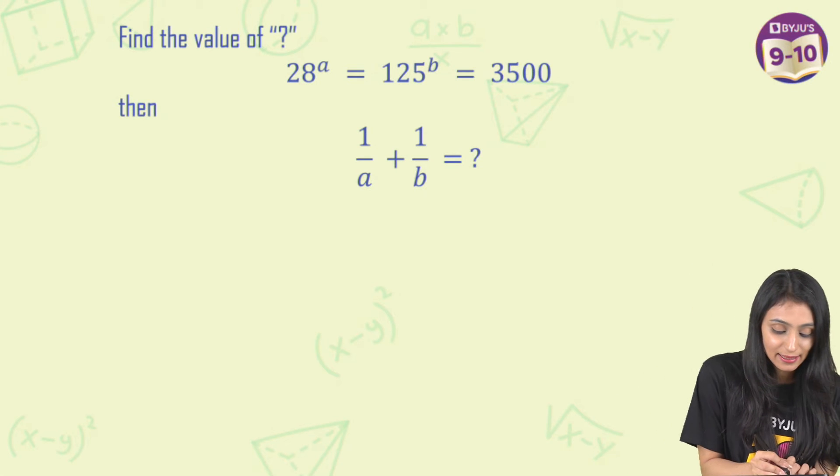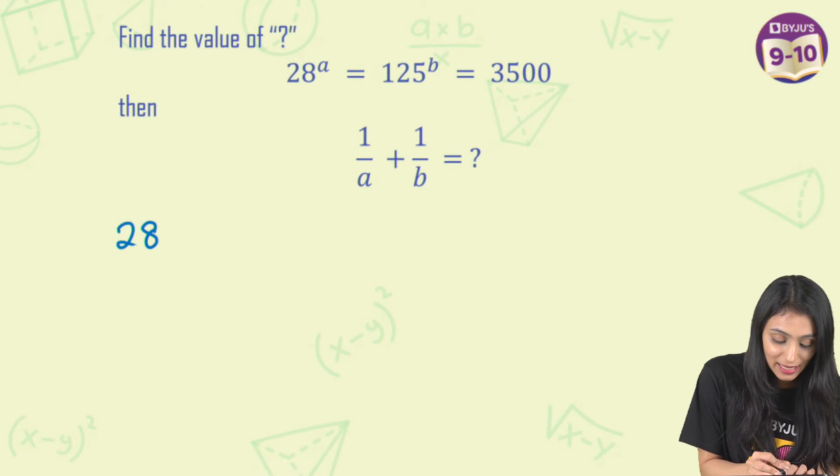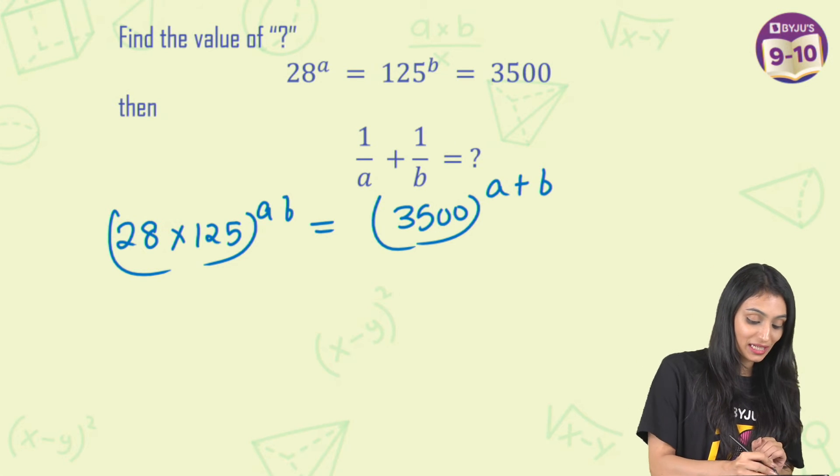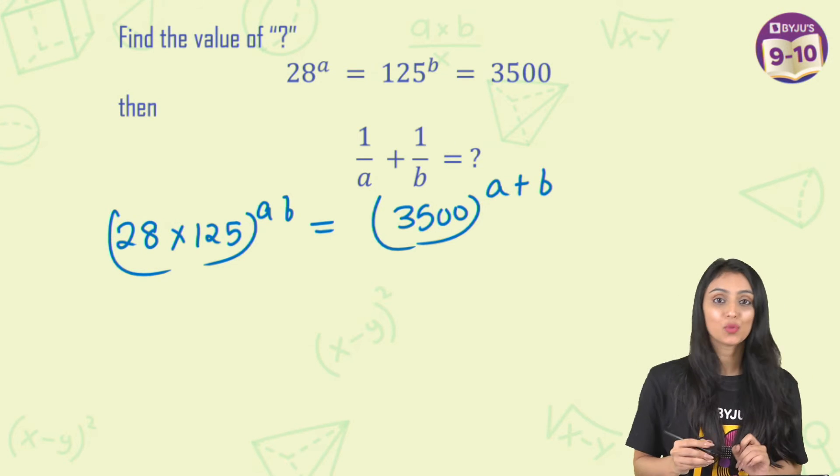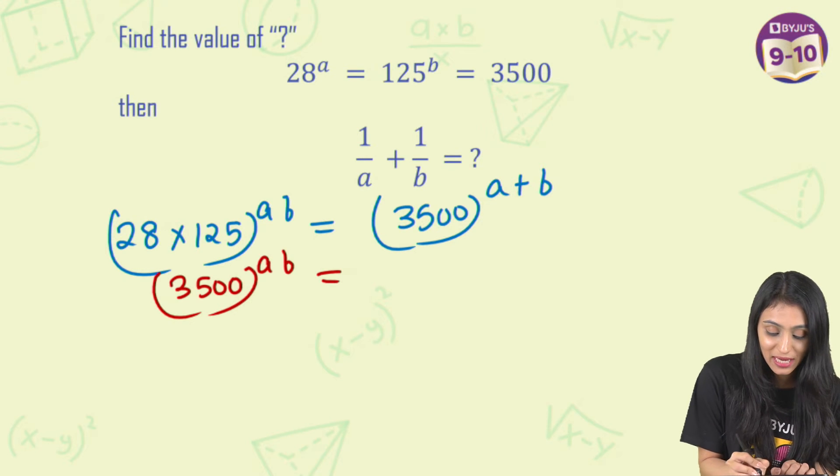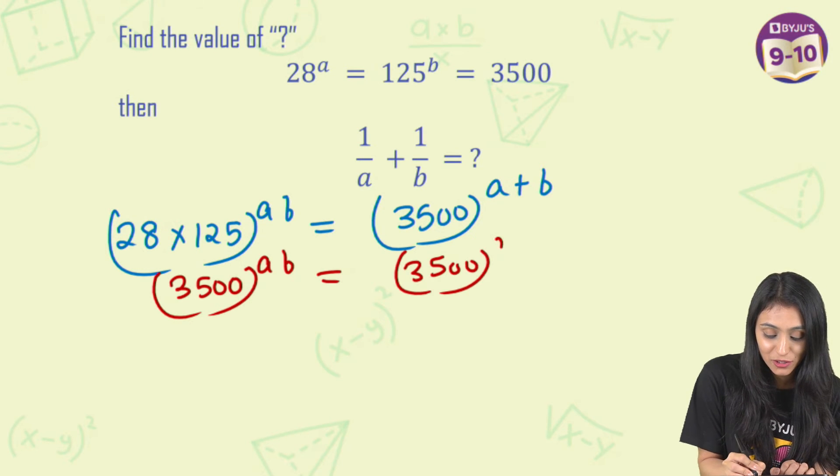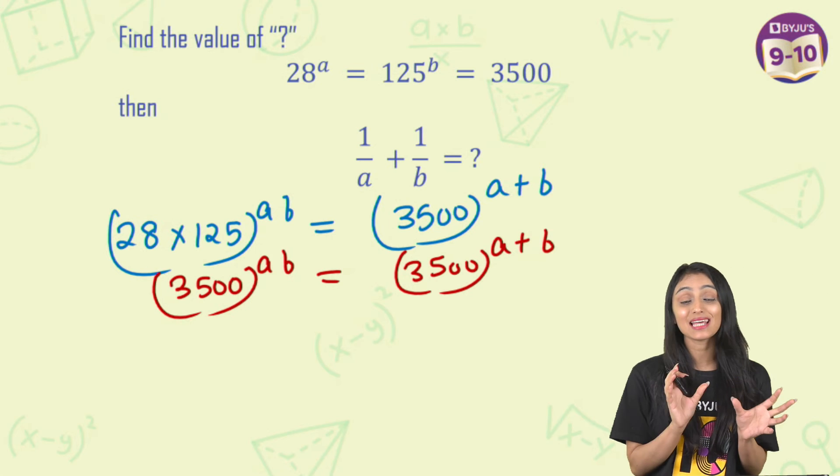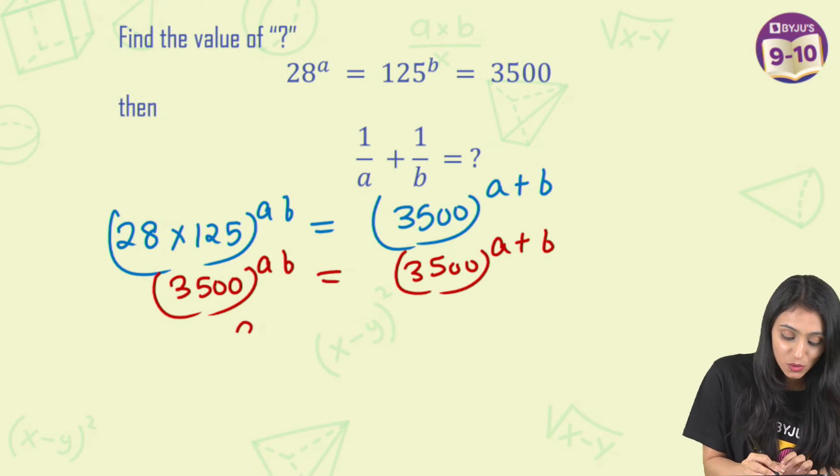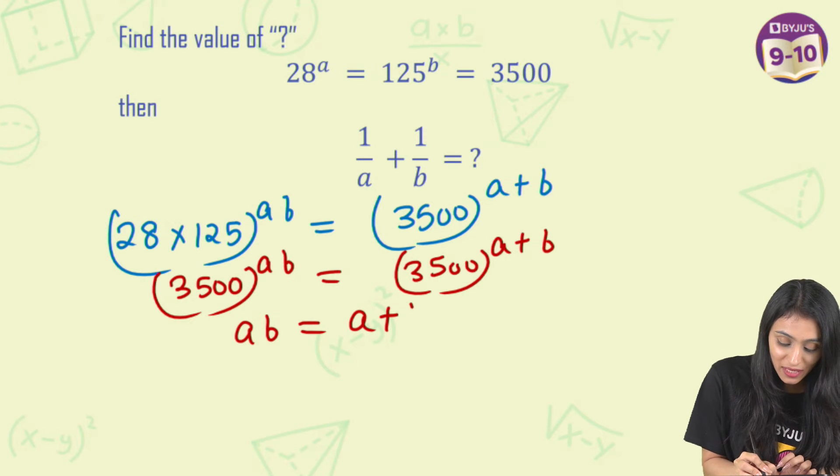So simply I can say that this is going to be 28 times 125 to the power AB equals 3500 to the power A plus B. Now if you multiply 125 with 28, this is going to be 3500 to the power AB as it is, and this is 3500 to the power A plus B. Now on both the sides when bases are same, we know that we can simply equate the powers in that case. So we will say that AB equals A plus B.